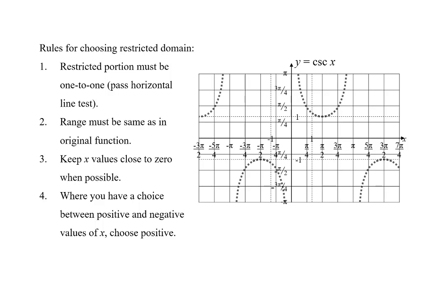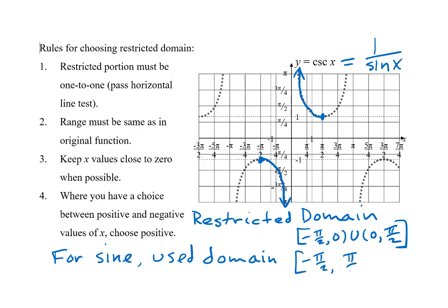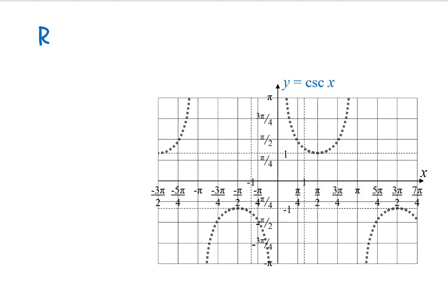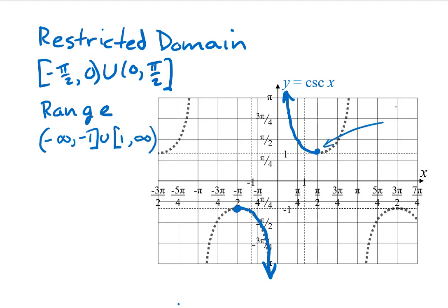Finally, we look at cosecant. This works very much like secant. We need one piece that goes up and one that goes down. We keep x close to zero, giving a discontinuous restricted domain of negative pi over 2 to zero and zero to pi over 2. This part of cosecant is 1-to-1, has the same range as the original cosecant function, and uses values of x close to zero. There is no need to choose between positive and negative values of x — to keep the full range, we need both sides. Cosecant is the reciprocal of sine; for sine, we use the restricted domain of negative pi over 2 to pi over 2, which agrees with what we have here. To find an inverse for cosecant, we use the discontinuous restricted domain of negative pi over 2 to zero and zero to pi over 2. The range is also discontinuous, giving us negative infinity to negative 1 and 1 to infinity. The function contains the points (pi/2, 1) and (-pi/2, -1), and has a vertical asymptote on the y-axis. This means the inverse must contain the points (1, pi/2) and (-1, -pi/2), and must have a horizontal asymptote on the x-axis.